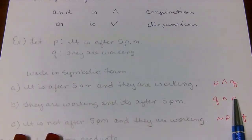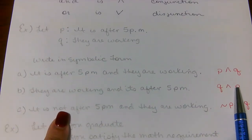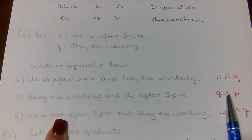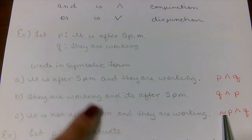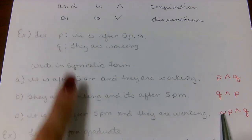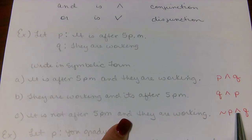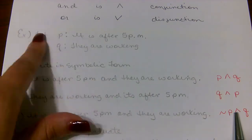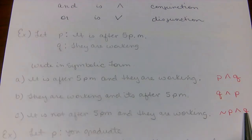Look at what happens when we add the word 'not.' It is not after 5 p.m. — we're going to use the little squiggly line to represent 'not.' The 5 p.m. part is still our P, so we're saying not P, then the 'and' symbol, and then they are working, which is Q. So we leave Q exactly the same.